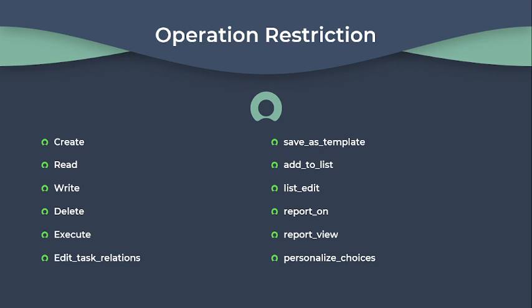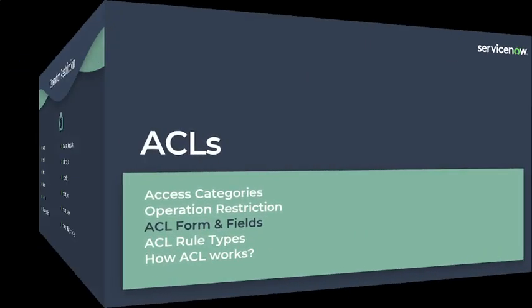Delete enables users to remove records from a table or drop a table. Execute applies to scripts or business rules, allowing or denying execution of specific scripts based on user permission. Edit task relation enables users to extend the task table. Save as template enables users to save a record as a template. Add to list prevents users from viewing or personalizing specific columns in the list. List edit enables users to update records from a list. Report on enables users to report on tables. Report view enables users to report on field ACLs. Personalize choices enables users to configure that table or field.